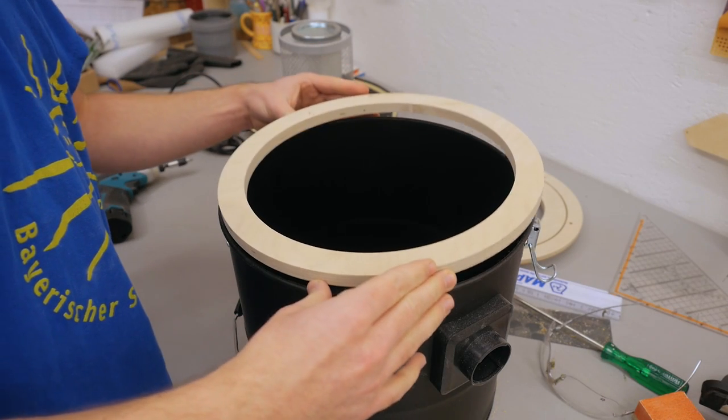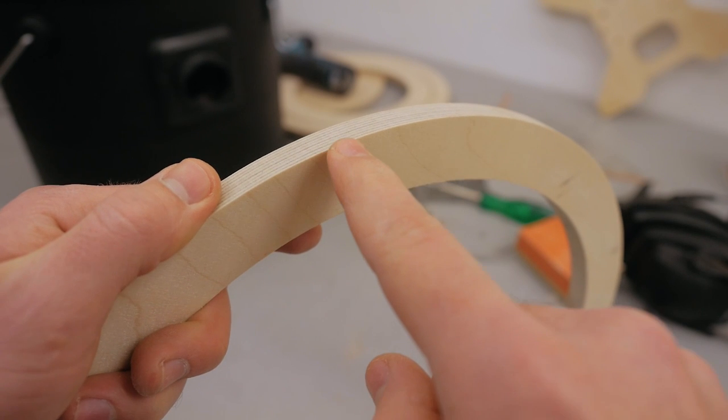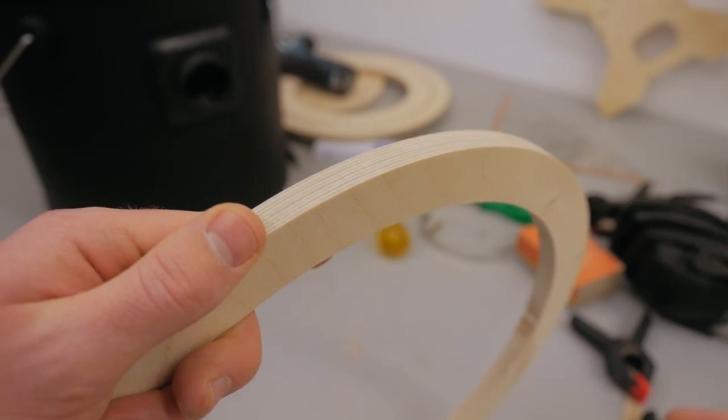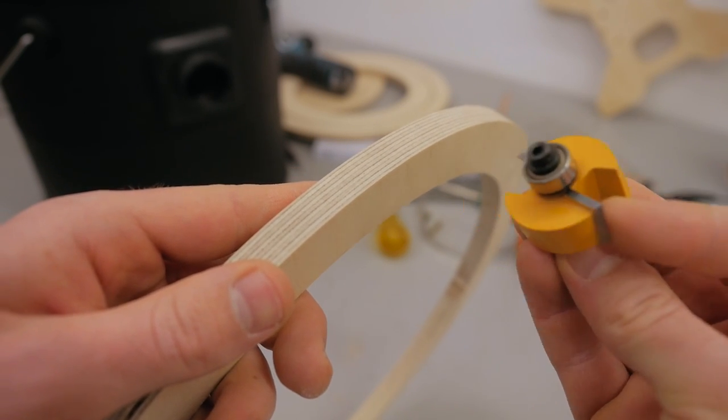Now I need to get the ring to fit inside the bucket and make it work with these latches. Therefore I need to cut a rabbet all around the circle, and the easiest way to do that would be with such a rabbeting router bit.